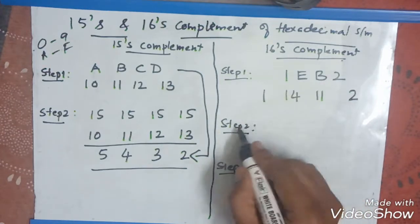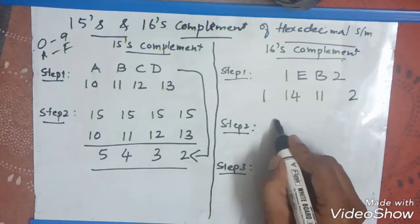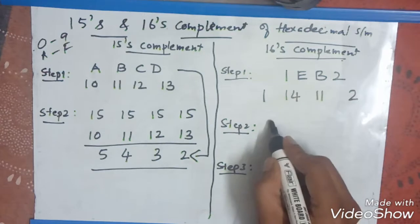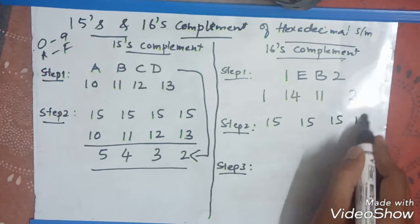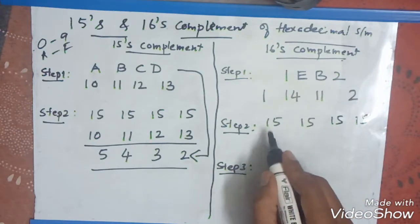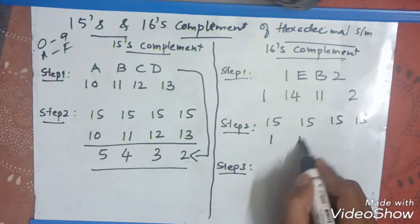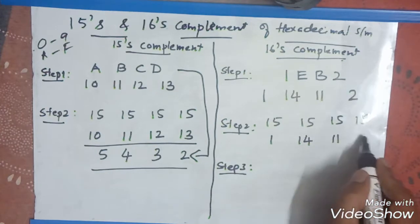Now, let us write down the second step. The second step is same as the fifteenth complement. Let us write down. How many? 4 digits. 4 times 15. 1, 2, 3, and 4. Write down the numbers below the fifteen. 1, 14, 11, 2.